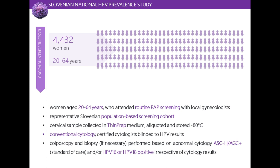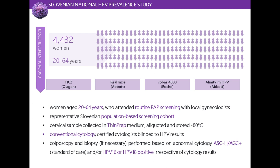Beside the samples for HPV testing, we also performed conventional cytology, which is the standard of care in Slovenia. Colposcopy and biopsy were performed according to standard of care for ASCUS high or worse cytology. However, irrespective of cytology result, all women who were HPV 16 or HPV 18 positive were also invited to colposcopy. The entire cohort was tested with four different HPV assays: Hybrid Capture 2 from Qiagen, Real Time from Abbott, the new Alinity, and Cobas from Roche on the 4800 platform.